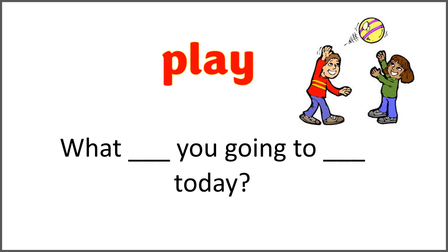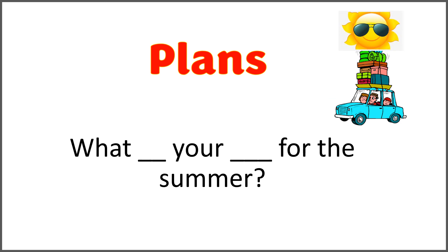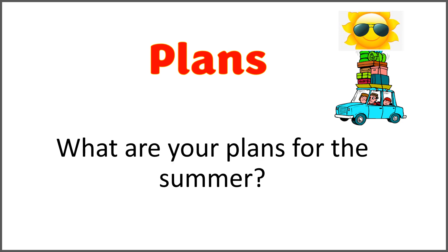The given word is 'play,' and the sentence is 'what blank you going to blank today?' Use the correct form of 'play' with 'are.' What are you going to play today? Are you going to play football? No, we are going to play handball. The given word is 'plans' and the sentence is 'what blank your blank for the summer?' Use the word 'plans' with 'are.' What are your plans for the summer?